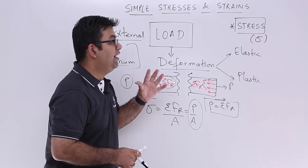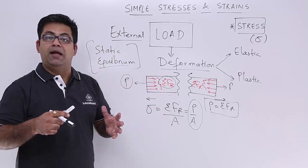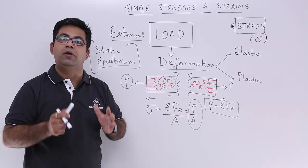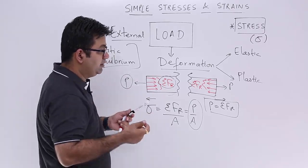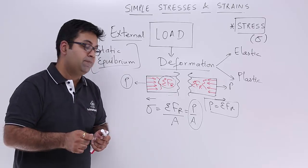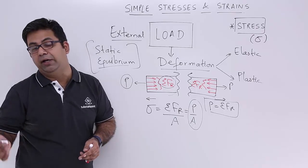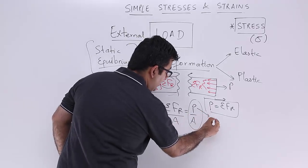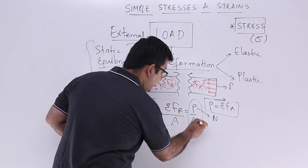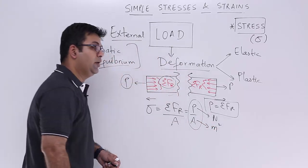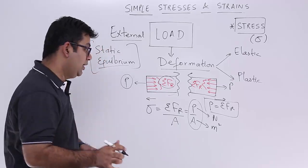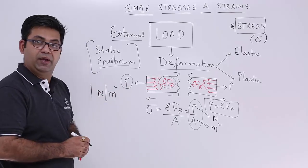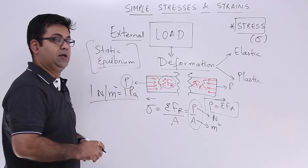When talking about a physical quantity like stress, it must have units. We will define the units in SI terms first, then in metric engineering terms. Sigma = P / A, where P has units of newtons and A has units of m², so the SI unit of sigma is newton per meter squared. One newton per meter squared equals one Pascal.